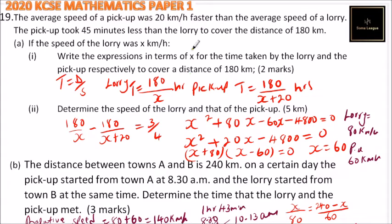So that's how you work out that question, and you should be able to score 10 marks. These are 2 marks, 5 marks, 3 marks totaling to 10 marks.